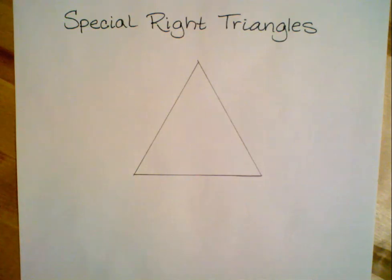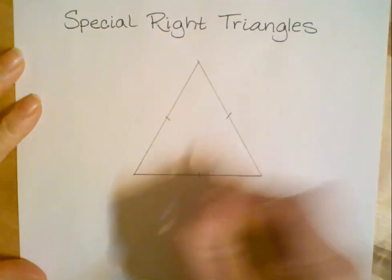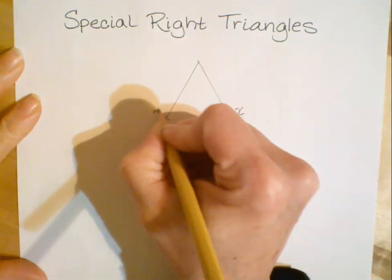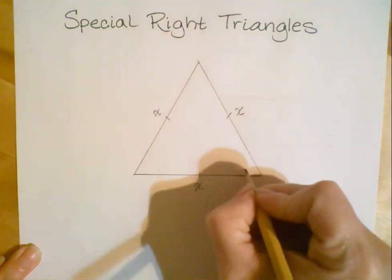Today we're going to be looking at the other type of special right triangle, which comes from an equilateral triangle. With an equilateral triangle, we know that the sides are all congruent. So if we consider each of these sides as being a length x, we also know that an equilateral triangle has three congruent angles, and that each of those angles measures 60 degrees.